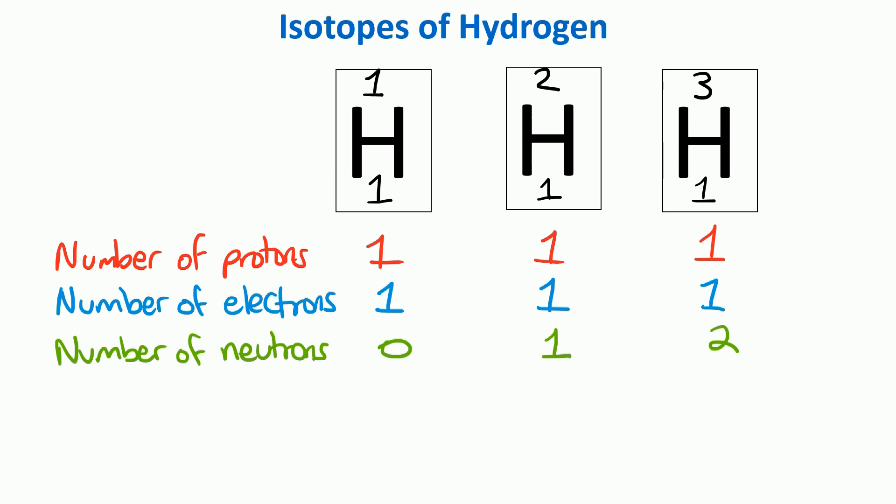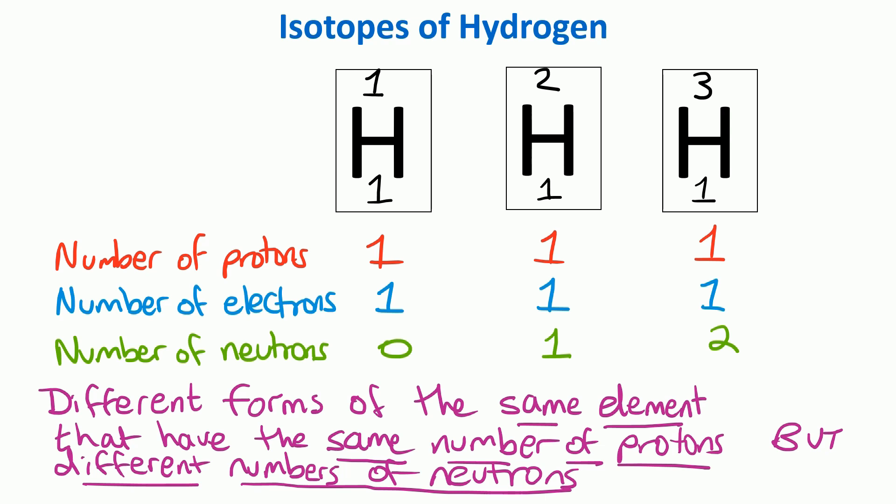So this fits in with our definition of an isotope. We can see it's different forms of the same element - they're all hydrogen. They've got the same number of protons, they've each got one, but they've got different numbers of neutrons.